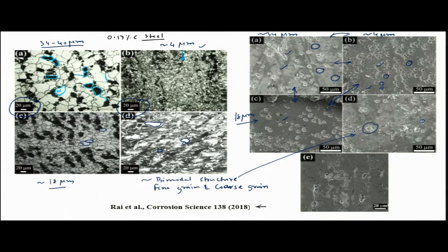The relationship is clear: as we reduce grain size, the number of grain boundaries and volume fraction of grain boundary increases. Since the grain boundary is the active zone, the possibility of pitting goes up. We need to verify where those pits are actually forming.